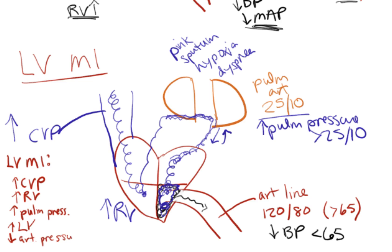The key to figuring out what's going on when you look at all your numbers is: where are things getting stuck? If nothing is getting stuck, all your numbers will be normal. But in the case of a right ventricular MI, left ventricular MI, or COPD, things are getting stuck somewhere. With the left ventricular MI, things get stuck in your left ventricle, so all the numbers preceding that — your CVP, your right ventricle, and your pulmonary pressures — will be high. Everything after the blockage will be low, which is your art line.